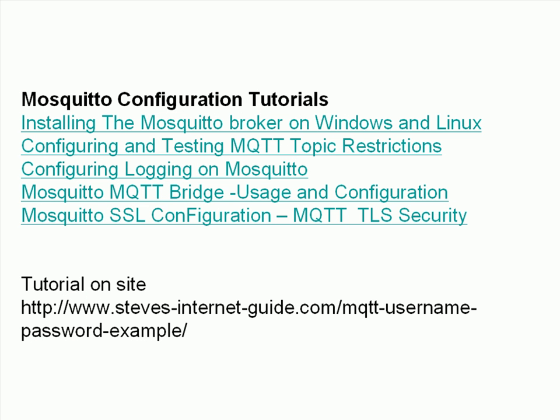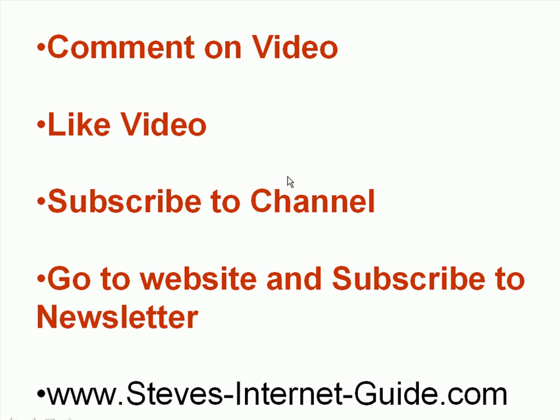To finish off, there is a written tutorial on the site with the URL shown at the bottom, where Python scripts are used for testing rather than the mosquitto_pub utility. At the bottom of that page you'll find useful links to other Mosquitto broker configuration tutorials. That's the end of the video — use the comment form below for comments, the like button if you liked it, and subscribe to the channel to know when more videos are published. Until next time, bye.